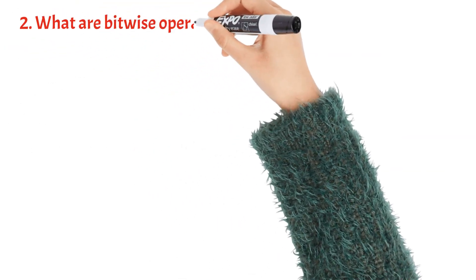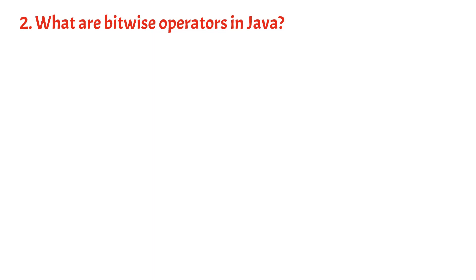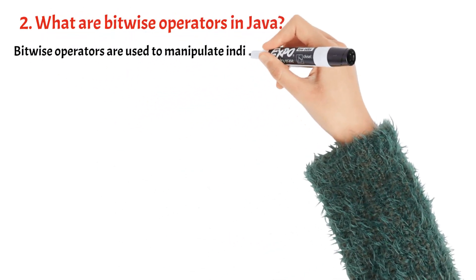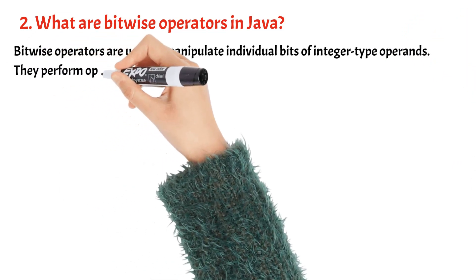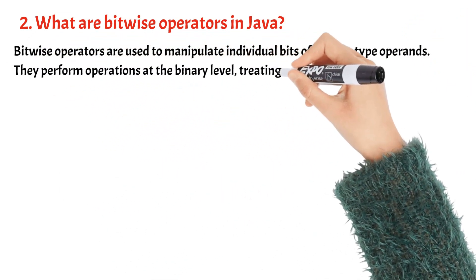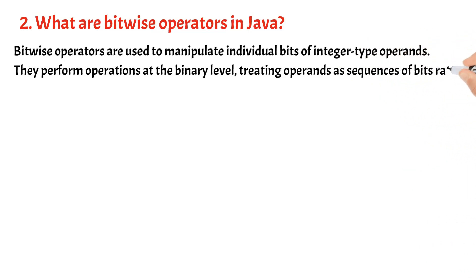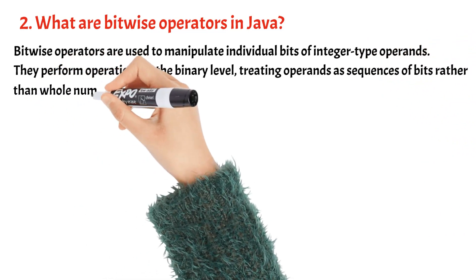What are bitwise operators in Java? Bitwise operators are used to manipulate individual bits of integer type operands. They perform operations at the binary level, treating operands as sequence of bits rather than whole numbers.